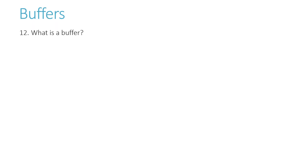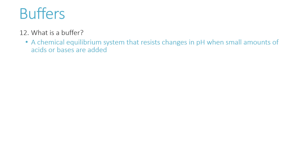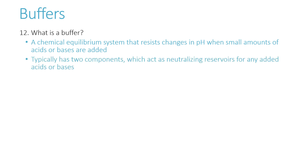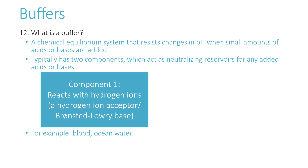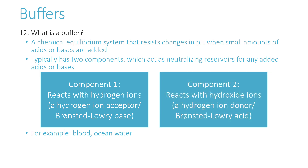What is a buffer? A buffer is a chemical equilibrium system that resists changes in pH when a small amount of acid or base is added. It typically has two components, each acting as a neutralizing reservoir. Examples include blood and ocean water. One component reacts with hydrogen ions — a Bronsted-Lowry base — and the other reacts with hydroxide ions — a Bronsted-Lowry acid. If you add acid, the base component reacts with it; if you add base, the acid component reacts with it. Because the hydrogen ions are being reacted away, there is little change in the pH of the system.